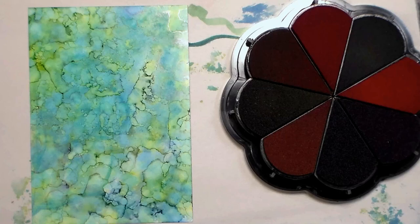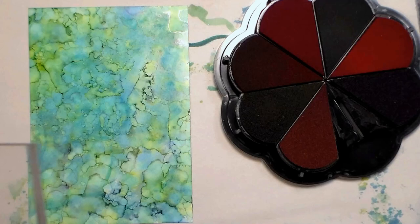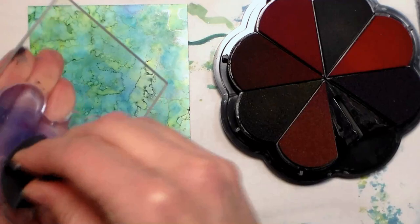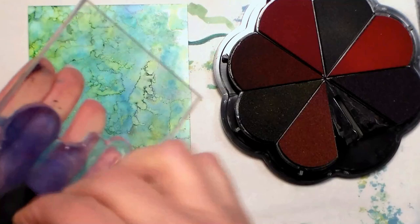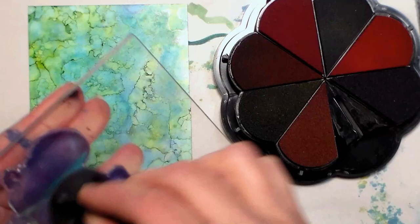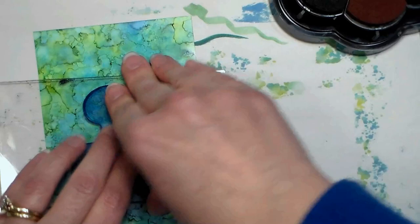Here I'm using some Ancient Page ink. I've had this for a long time, I don't even know if they make it anymore, but I decided that I wanted to use this because I only have like two colors of Ranger Archival, and I really wanted a soft blue. So I thought that this probably would dry on my Yupo paper, where a regular dye-based ink, I didn't know if it would dry on top of the alcohol ink.